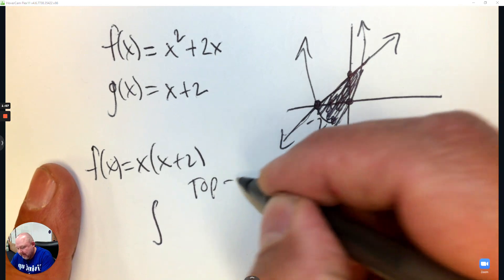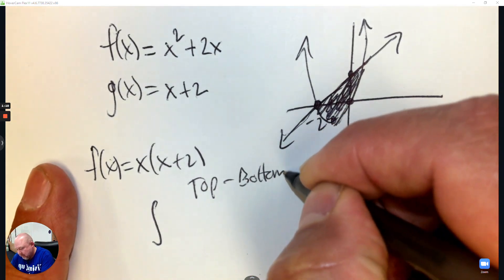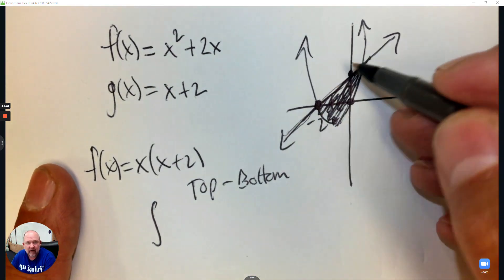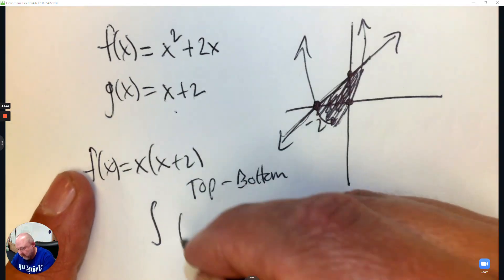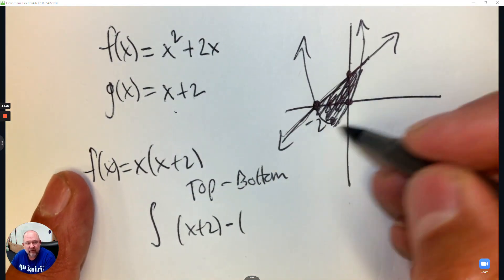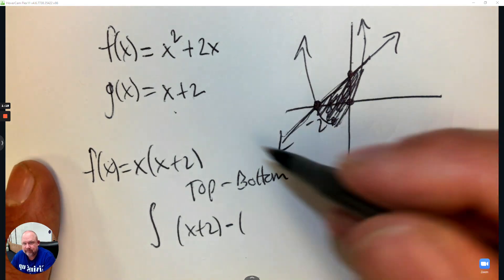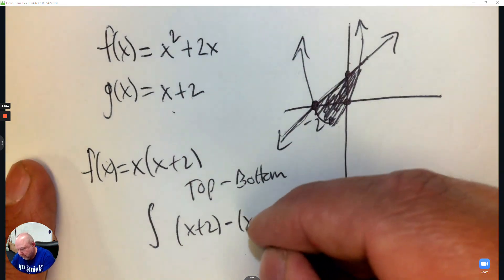So I know this is an integration question. I want to remember that to find area, I go top subtract bottom. So which equation is on top? That's the line, which is x plus 2. Subtract what's underneath the bottom. That's the parabola x squared plus 2x.